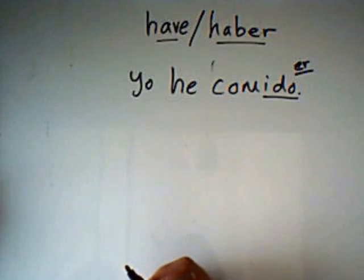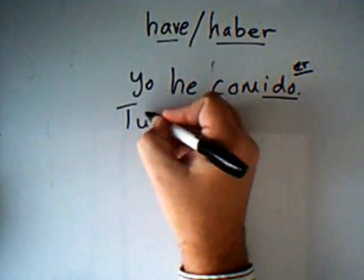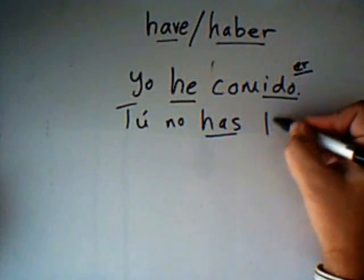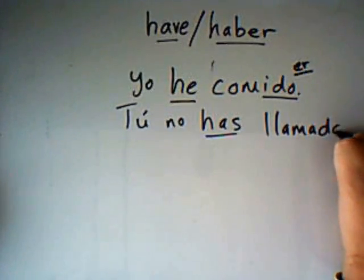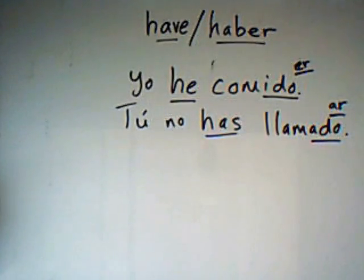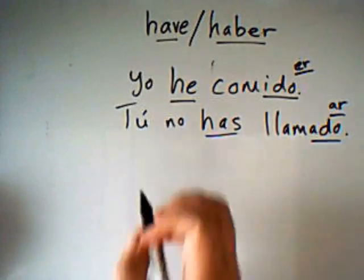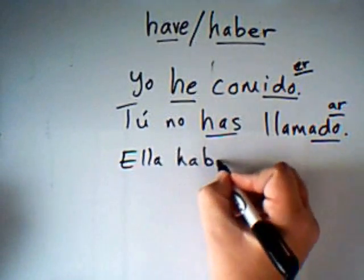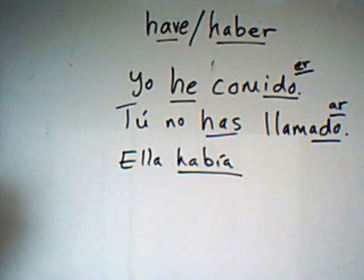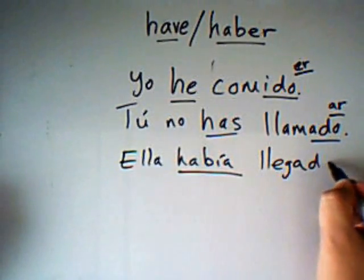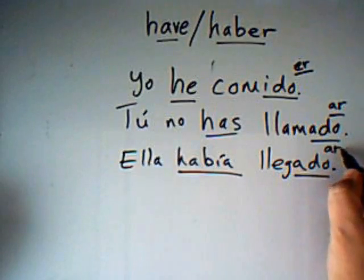Our second example was 'you have not called,' which would be: tú no has llamado. There's our form of the verb haber, and llamado is our past participle. Notice it's an AR verb and the ending is -ado. And one more example: 'she had arrived' — ella había llegado. Había is just a past tense form of the verb haber, the auxiliary 'to have,' and llegado from llegar — another AR verb — so the ending is -ado.